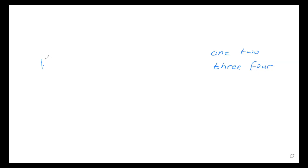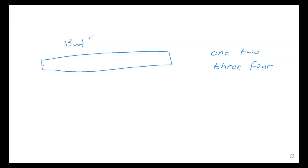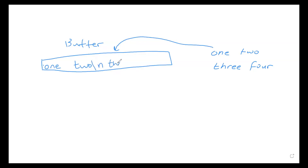So what this ends up looking like inside the buffer — this is going to be the input buffer — it looks like: one, space, two, space, two, and then there is a new line, and then followed by three, followed by a space, and then followed by four, and then there's a new line. So this gets translated into this kind of picture inside the buffer.